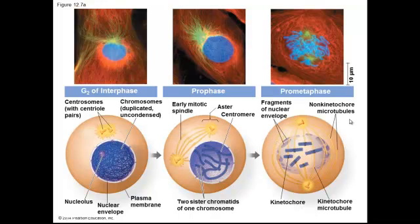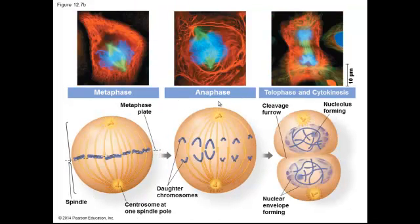The next phase is prometaphase. During this phase, the nuclear envelope begins to break down in order to release the chromosomes, and then some of the microtubules, which are part of the spindle, attach to the centromere of the different sets of sister chromatids. The middle phase of mitosis is metaphase, where the microtubules line the sister chromatid pairs along the equator of the cell.